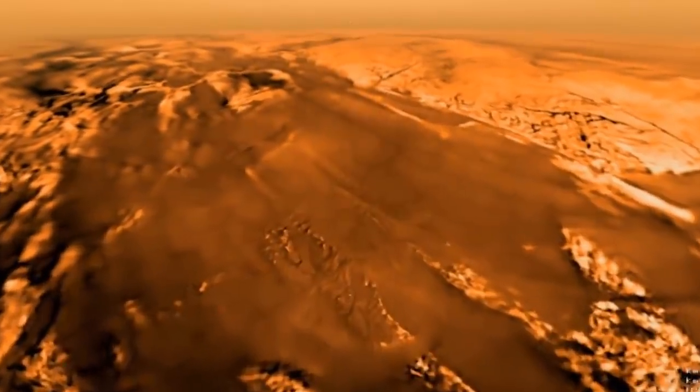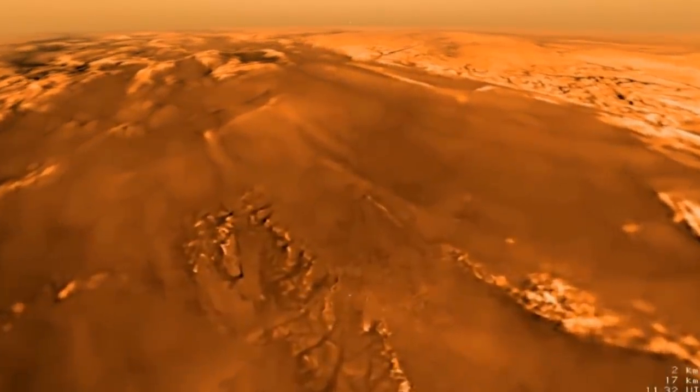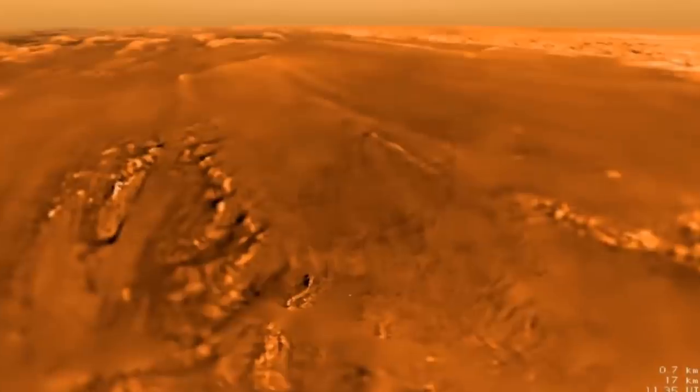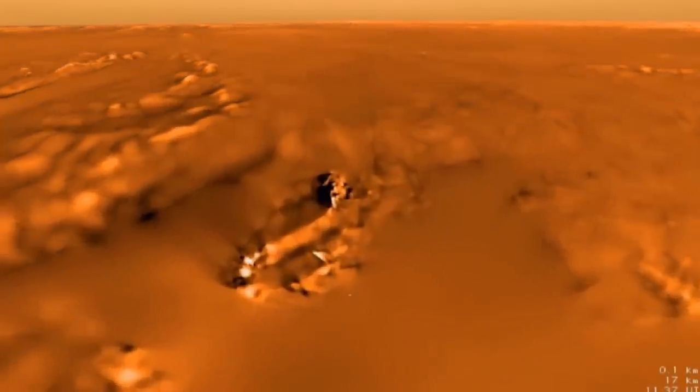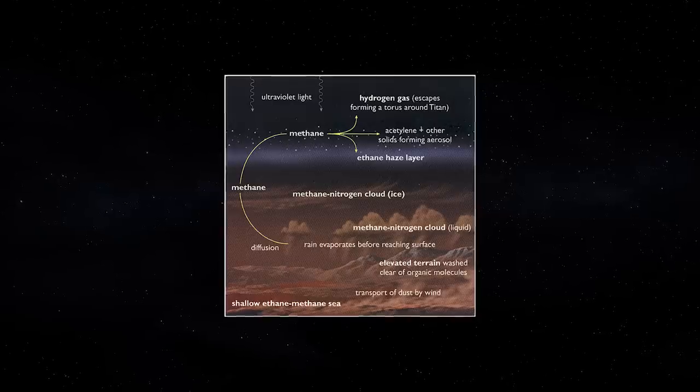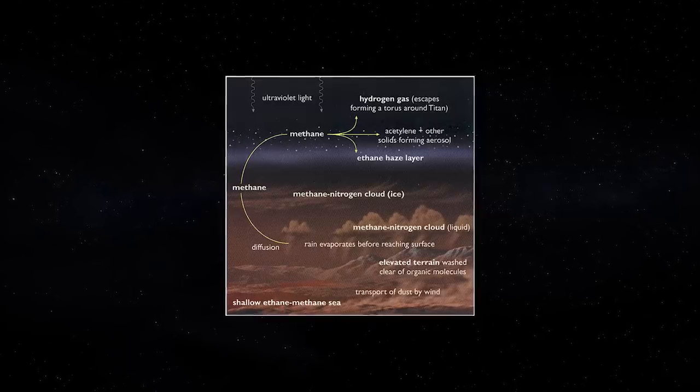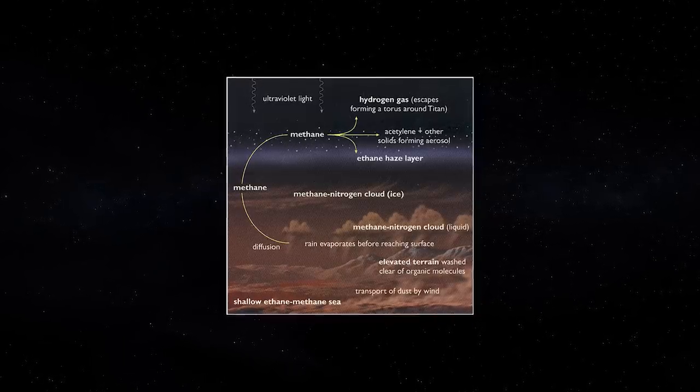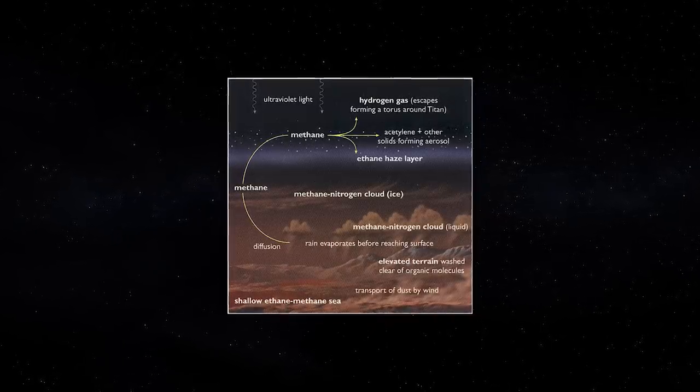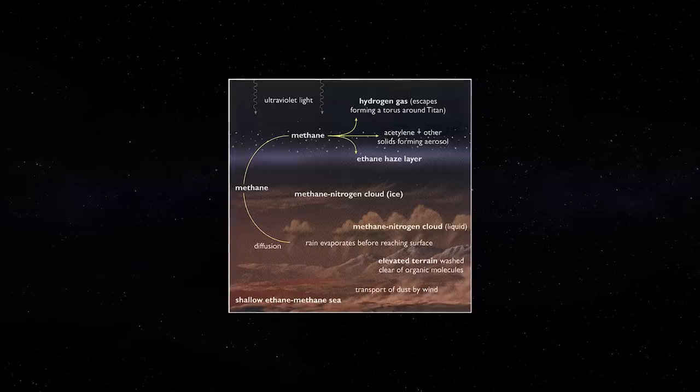Curiously, scientists have found levels of hydrogen and acetylene near the surface to be much lower than expected. The physics of diffusion causes the higher concentration of hydrogen in Titan's upper atmosphere to flow downward at a rate of 10 to the 25th molecules per second.